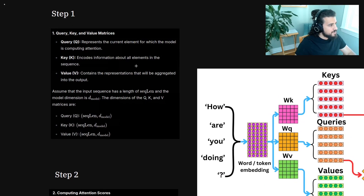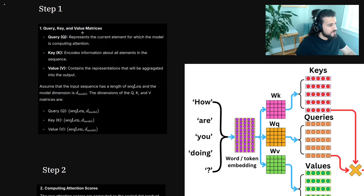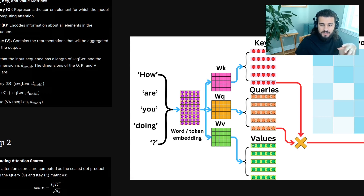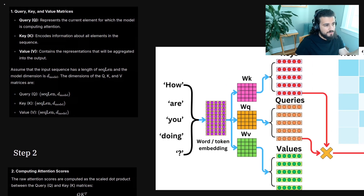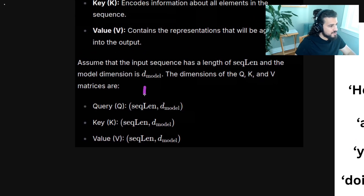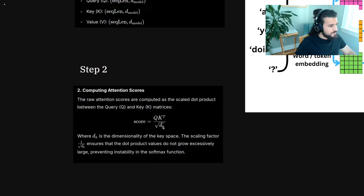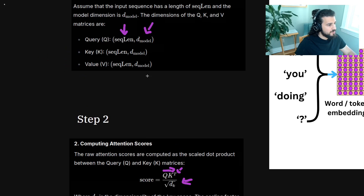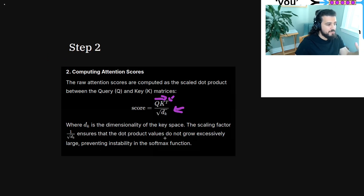So let's go through the steps. Step one is to have our key, query, and value matrices. Step two: we transpose the key matrix, compute the dot product between queries and keys transposed, then normalize by dividing by the square root of the model dimension. This ensures that the dot product values do not grow excessively large, preventing instability in the softmax function.